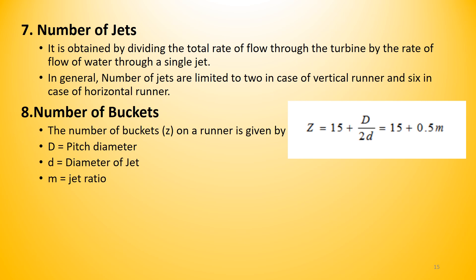The number of jets is obtained by dividing the total flow rate through the turbine by the flow rate for a single jet. Generally, the number of jets is limited to two in case of a vertical runner and six in the case of a horizontal runner. The number of buckets Z is given by: Z = 15 + D/(2d) = 15 + 0.5m, where m is the jet ratio. These equations must all be considered when designing a Pelton wheel.